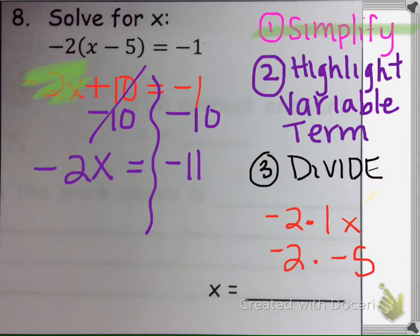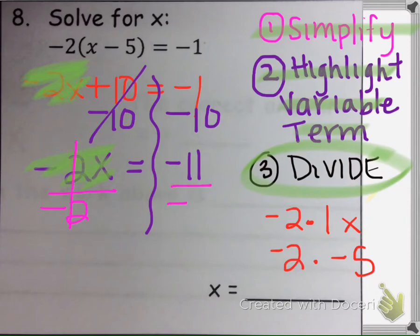Now, since the variable term is all by itself, the last step is to divide. We're going to divide by the coefficient of x because dividing will make 1x. Whatever we do to the left side, we have to do to the right side. A negative divided by a negative is a positive, so the negatives will go away because they make a positive.